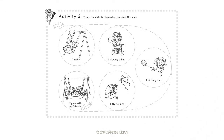Activity 2: Trace the dots to show what you do in the park. I swing. I ride my bike. I kick my ball. I fly my kite. I play with my friends.